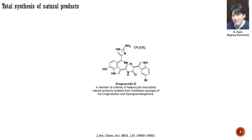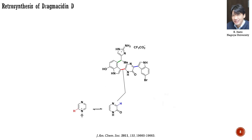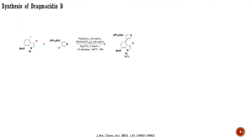Modern developments in CH activation have found applications in the total synthesis of natural products and other complex systems. Here you can see dragmacidin D, a natural product isolated from sponges. The group led by Atami from Nagoya University suggested and successfully performed the total synthesis of this natural product, mainly relying on direct CH transformations. Specifically, they utilized multiple CH arylations. They began with the palladium-catalyzed CH arylation of the silyl-protected thiophine, using an iodinated indole derivative.